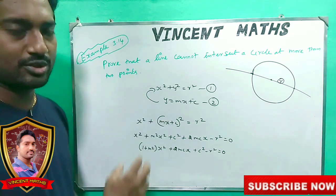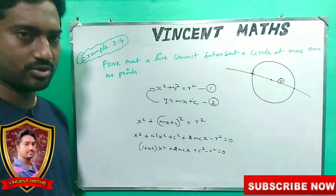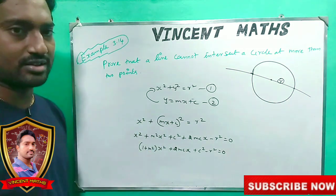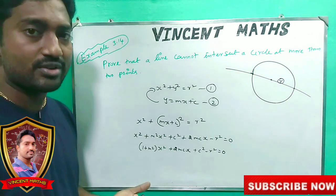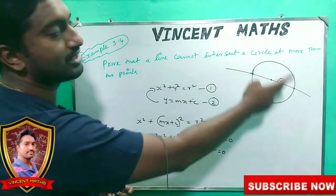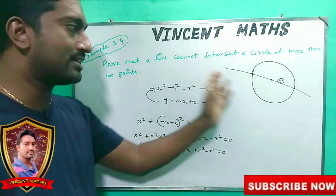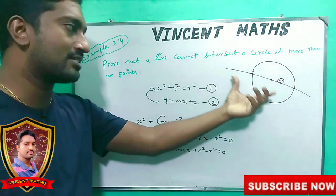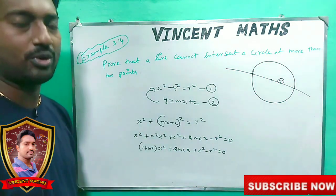If we have x cubed, how many solutions can there be? Three solutions. What about x squared? We have the quadratic equation — it gives two solutions. If we have a circle, we can draw a line and intersect it. We can approach the problem in two ways. If the line doesn't touch the circle, you will be able to prove it.